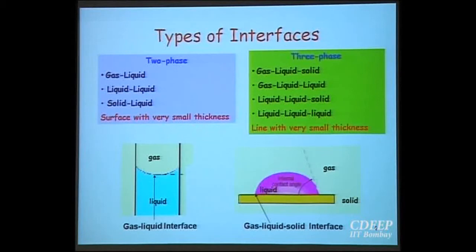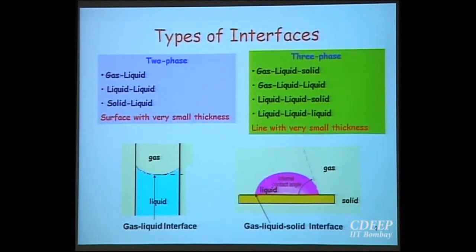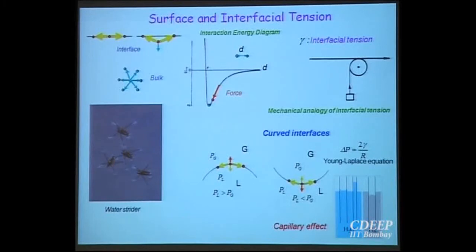A gas-liquid interface can be considered as a two-dimensional surface. You have gas-liquid, liquid-liquid, and solid-liquid interfaces. You can also have a three-phase interface — for example, a solid, liquid, and gas interface — which is a line rather than a surface. One of the important characteristics of an interface is that it has surface tension or interfacial tension. Where liquid and air meet, we call it surface tension; where two liquids or a solid and liquid meet, we call it interfacial tension. The more general term is interfacial tension.